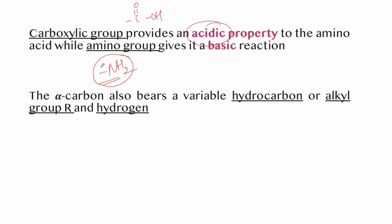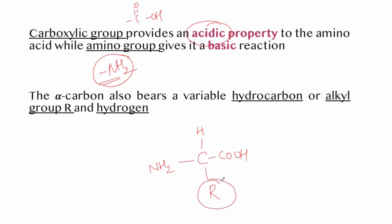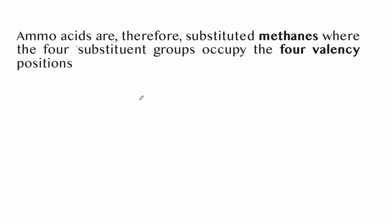While the carboxylic group provides acidic property, the amino group (NH2) gives the amino acid its basic property. The alpha carbon also bears a variable hydrocarbon or alkyl group R and a hydrogen. So the four groups are: hydrogen, carboxylic group, amino group, and R group.